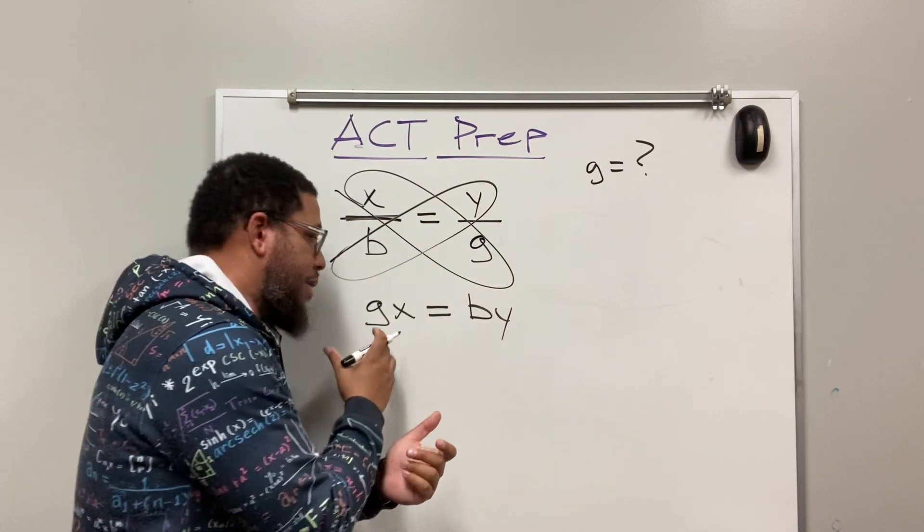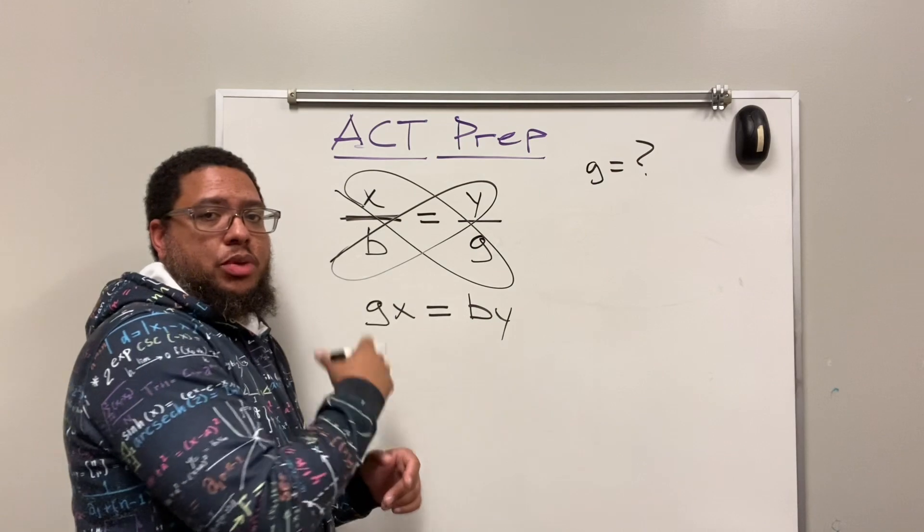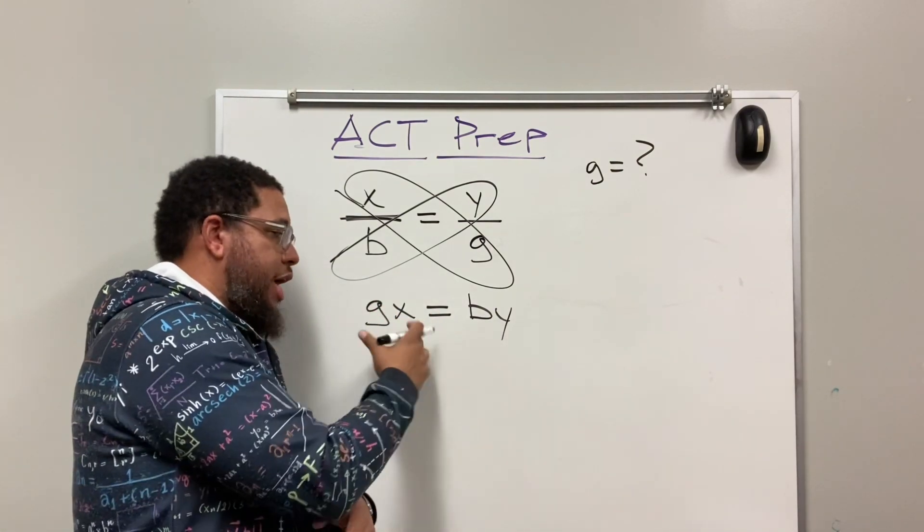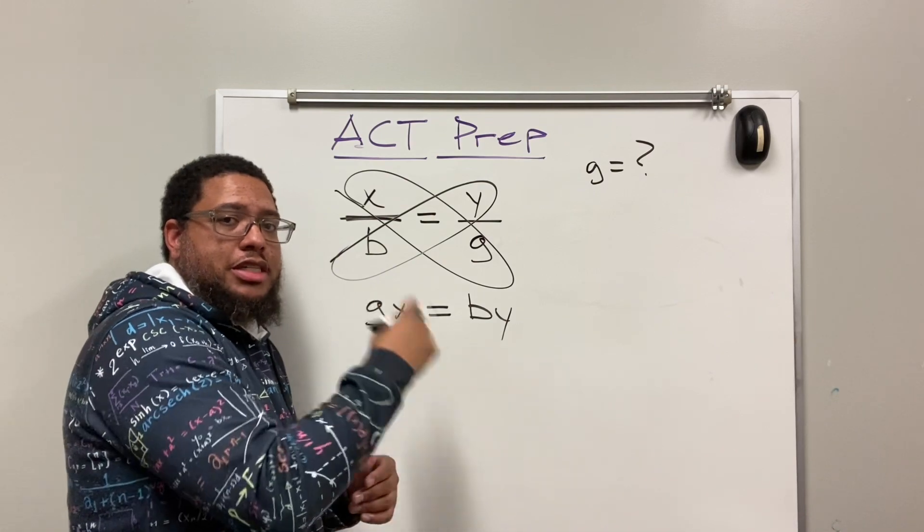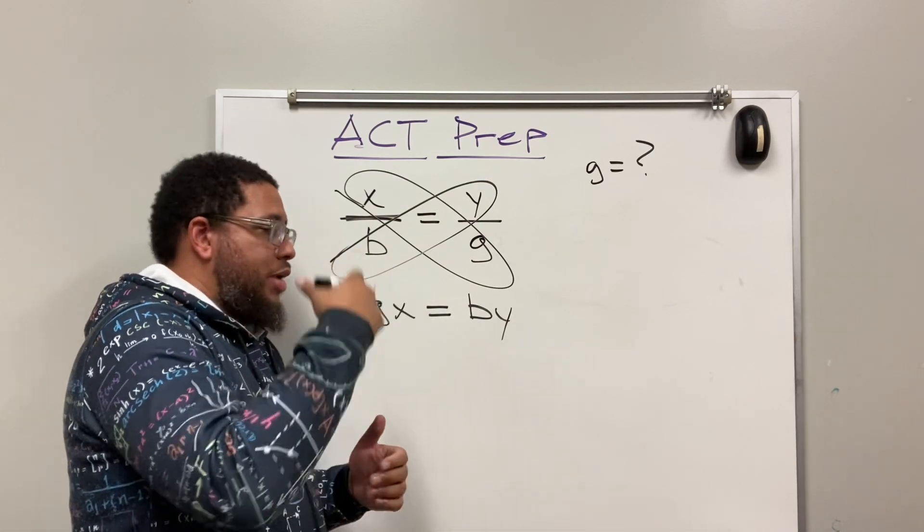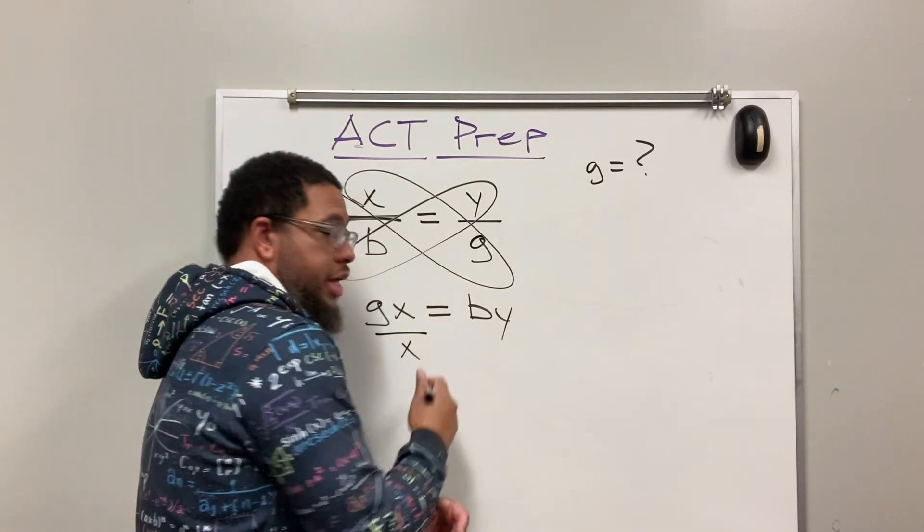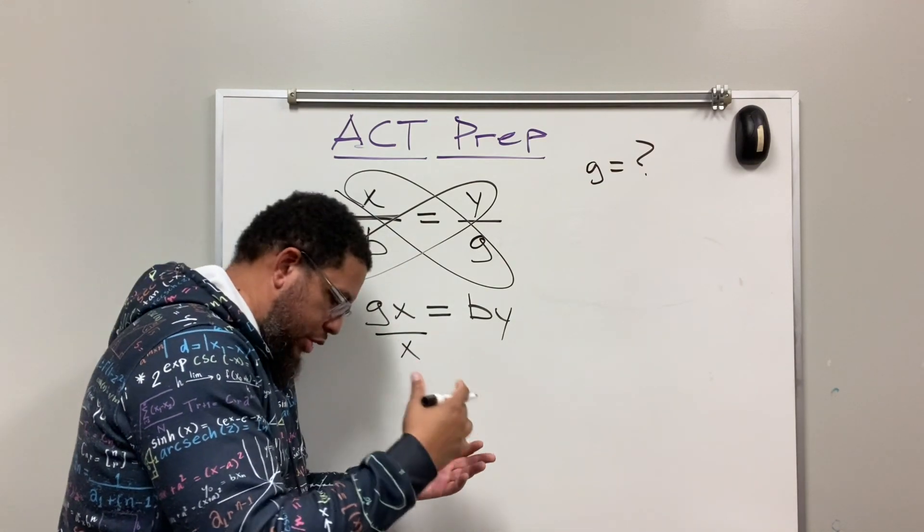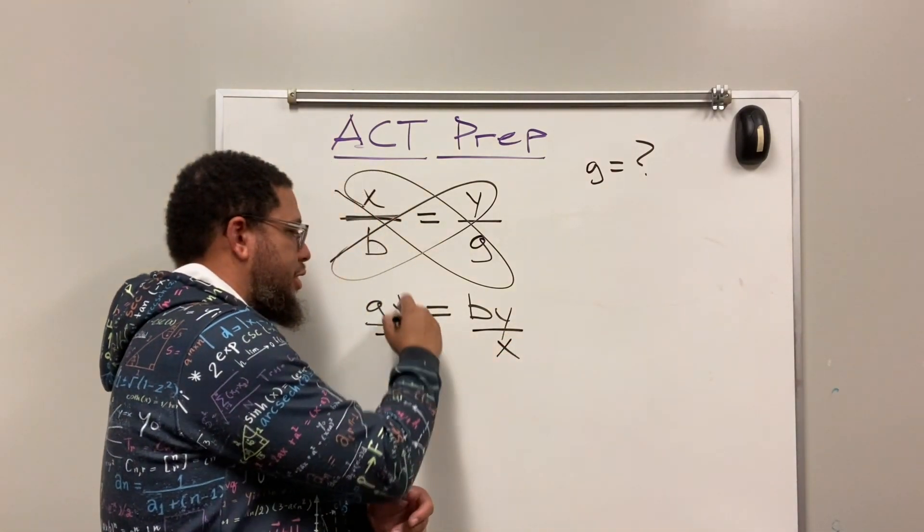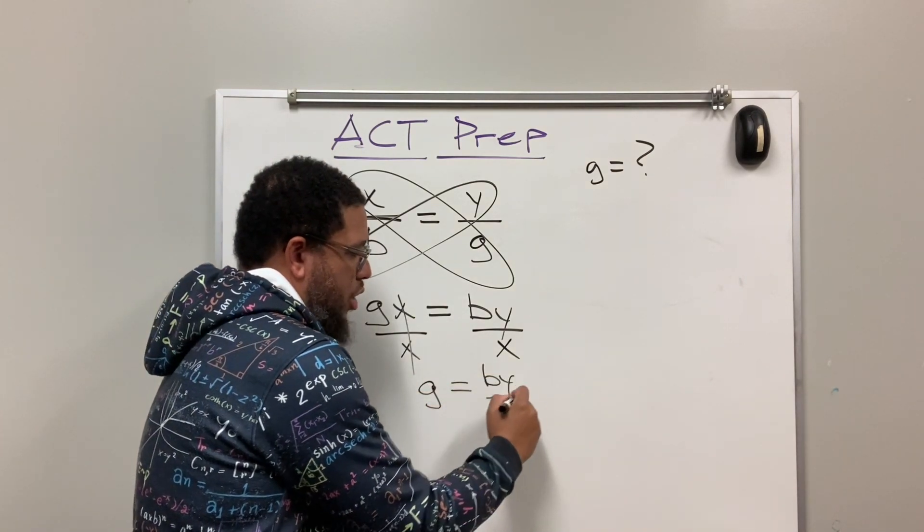That's why we use the Malcolm X method to cross multiply. But now I got to get G by itself. So how do I get G by itself? I get rid of this X. How do I get rid of this X? By doing the opposite operation for what X is involved in right now. GX means multiplication, G times X. That's what GX means. So the opposite of multiplying is dividing, divided by X. And if I do it on the left side, I got to do it on the right side. So divide that by X. These X's cancel out, leaving you with G is equal to BY over X.